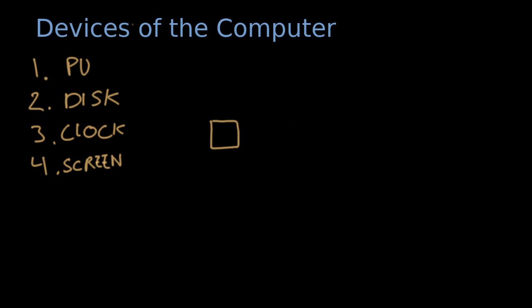Three important devices usually associated with a screen device are a keyboard device, a mouse device, or a touch screen device. For example, a computer can have two screens with two independent keyboards and mice, or a touch screen for each. This allows multiple people to use a single computer.